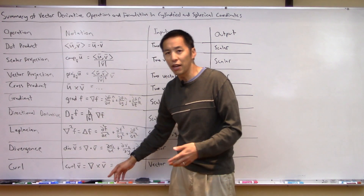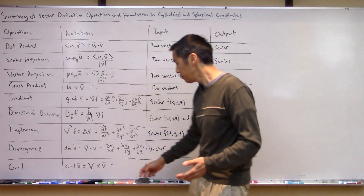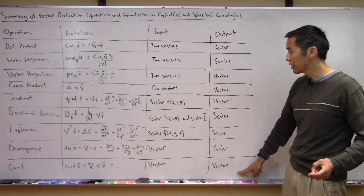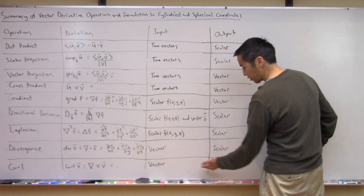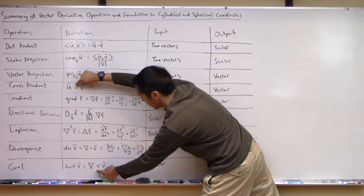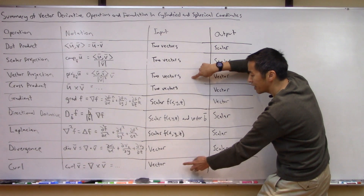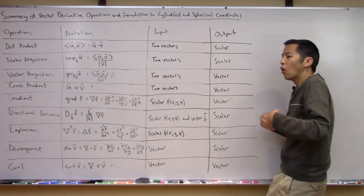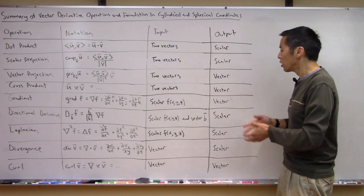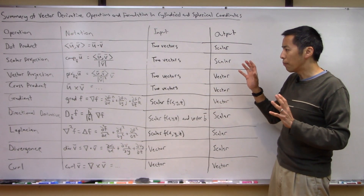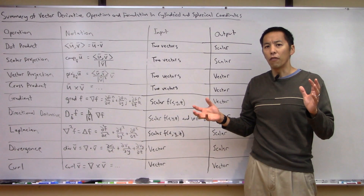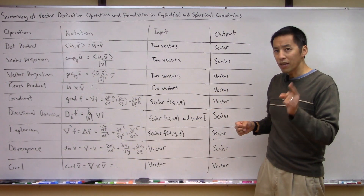The curl, denoted as del crossed v, takes a vector as input and produces a vector as output. So you can differentiate the cross product from the curl because their inputs are different — the cross product takes two vectors while the curl takes just one. Hopefully the context makes it clear which operation is meant. To summarize, we've covered all the different operators along with their inputs and outputs.